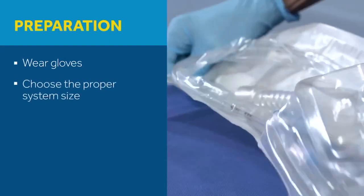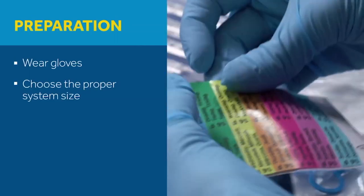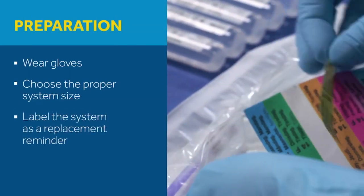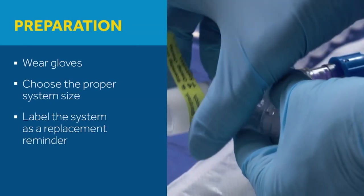Choose the size of the system relative to the endotracheal or tracheostomy tube in place. Label the system on the connector or on the suction valve as a reminder of the replacement time frame.